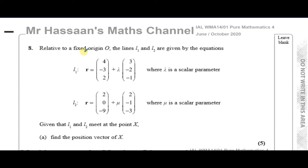It tells us relative to a fixed origin O, the lines L1 and L2 are given by the equations: L1: R = (4, -3, 2) + lambda(3, -2, -1), where lambda is a scalar parameter, and L2: R = (2, 0, -9) + mu(2, -1, -3), where mu is a scalar parameter. Given that line 1 and line 2 meet at the point X, find the position vector of X.